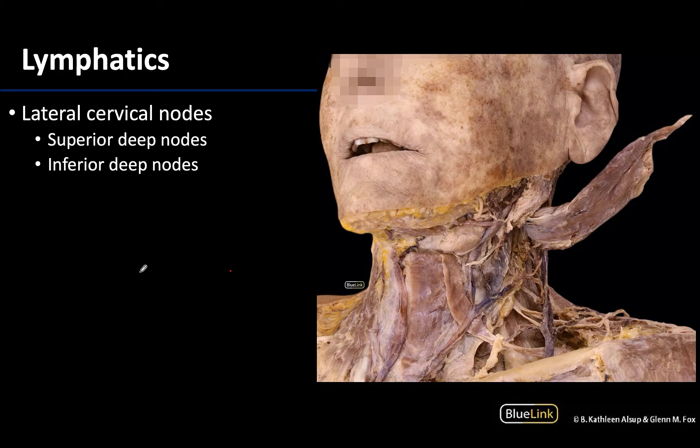Something that you are not going to be able to see here is what's referred to as the superficial cervical lymph nodes. They are going to be more closely associated with the superficial veins, particularly the external jugular vein, but these will eventually drain into the deep lateral cervical lymph nodes, and so that's what we're going to focus on a bit more here.